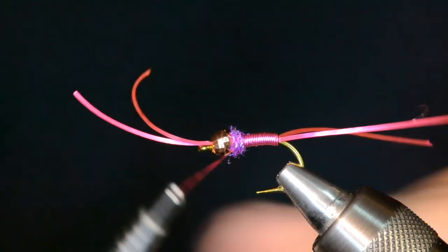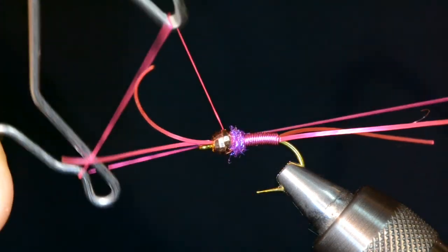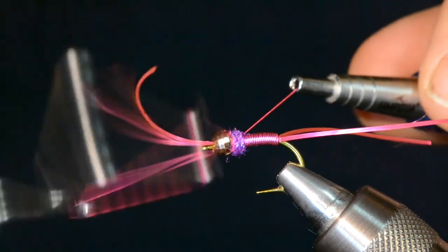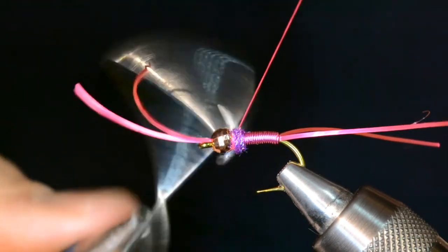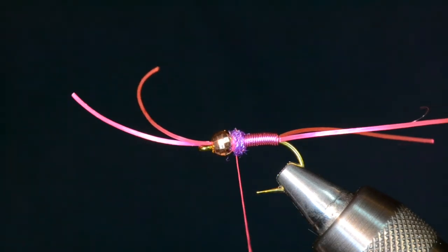I'm going to do one little whip finish right there, and then I might do a second dubbed whip finish just to hide it. So that's three, that's four turns. That's a good whip finish right there. I'm confident that that would hold, that would fish well, but I'm going to do just a little tiny bit more dubbing.